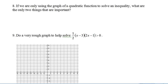Okay, so if we're only using the graph of a quadratic function to solve an inequality, what are the only two things that are important? Well, on the last example, the first thing we needed to know was the 1 and the 5 because they were intercepts. And then we had to know that it was greater than up here. So, we need to know the x-intercepts. And we need to know if it's opening up or down.